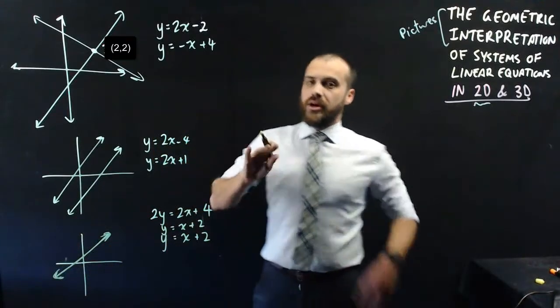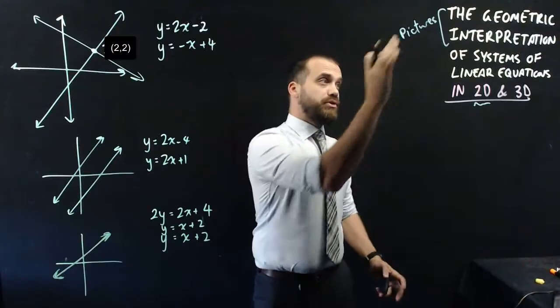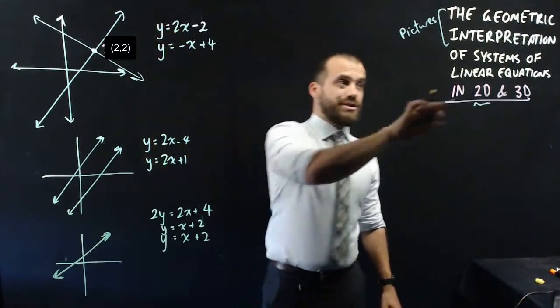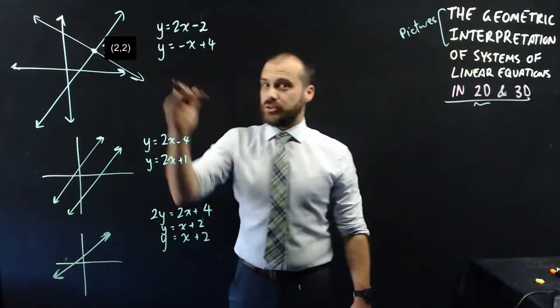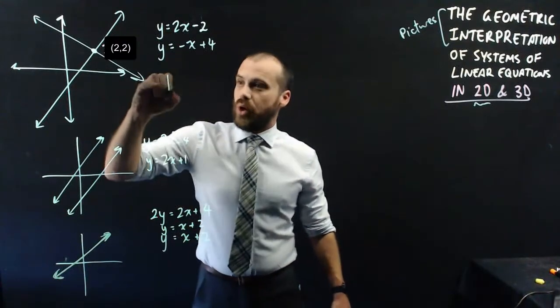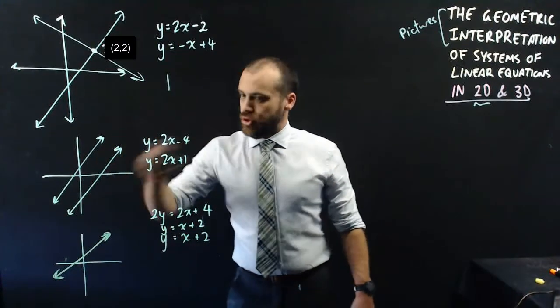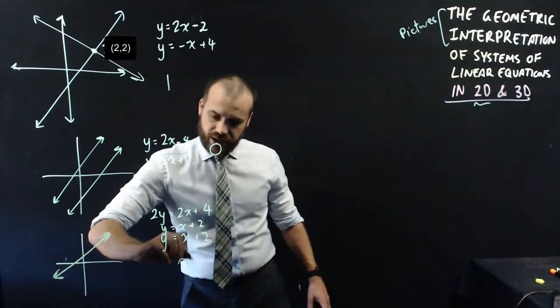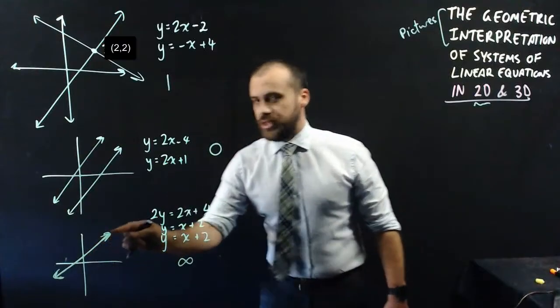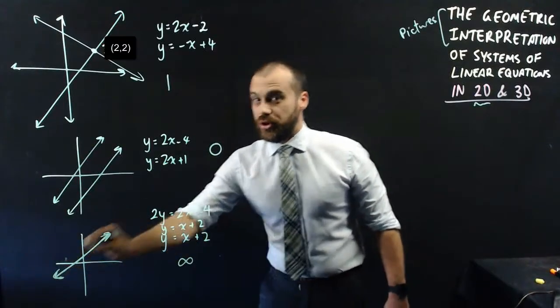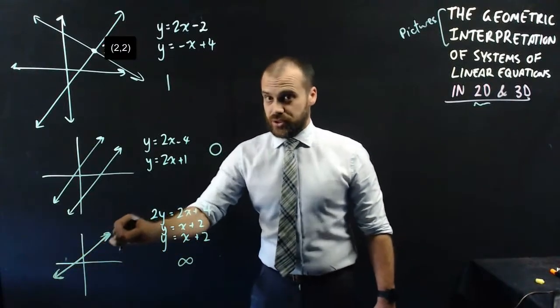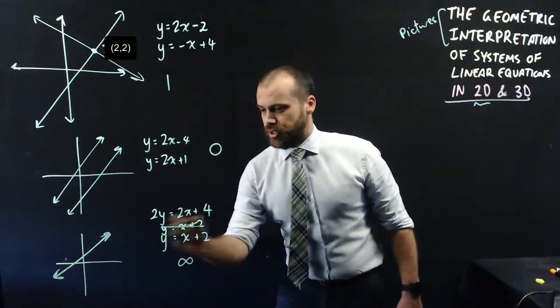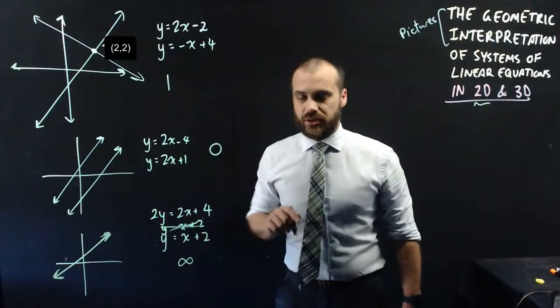There are two lines there. In conclusion, the geometric interpretation of systems of two linear equations in two dimensions can result in three different things: one solution, no solutions, or infinite solutions because every single point along those two lines that are identical is a solution to that system of linear equations.